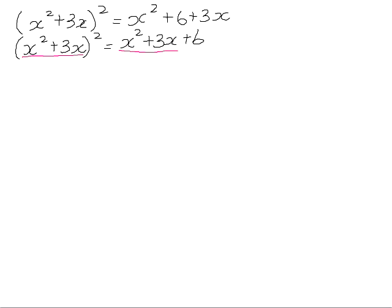In order to simplify this equation and make it easier to solve, we're going to take that x squared plus 3x and let it equal another variable. Oftentimes the letter k is used, but you can use any variable you like — I'm going to use m. So wherever we have x squared plus 3x in the equation, we replace it with m. We'll have m squared on the left (since the whole of x squared plus 3x is being squared), and on the right-hand side, the whole of x squared plus 3x becomes m, giving us m plus 6.